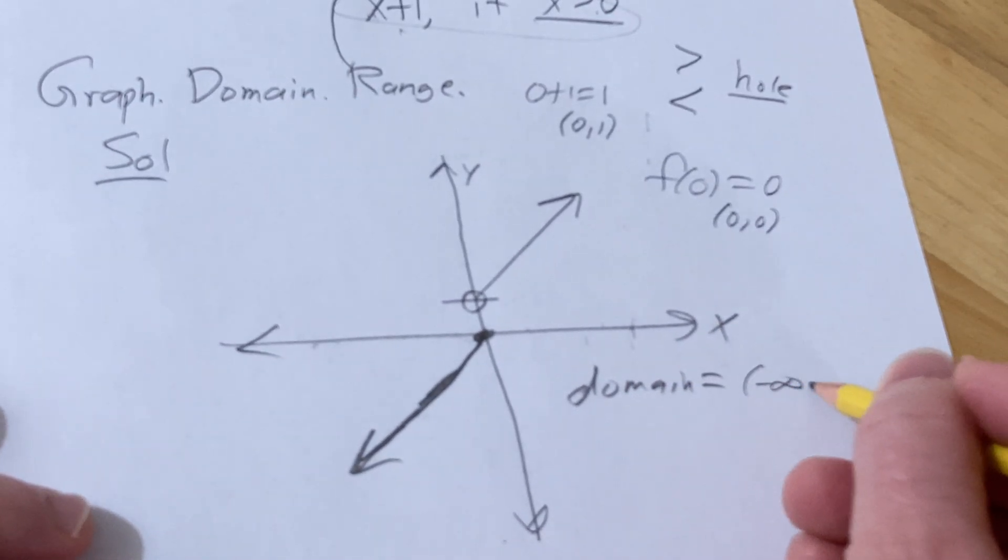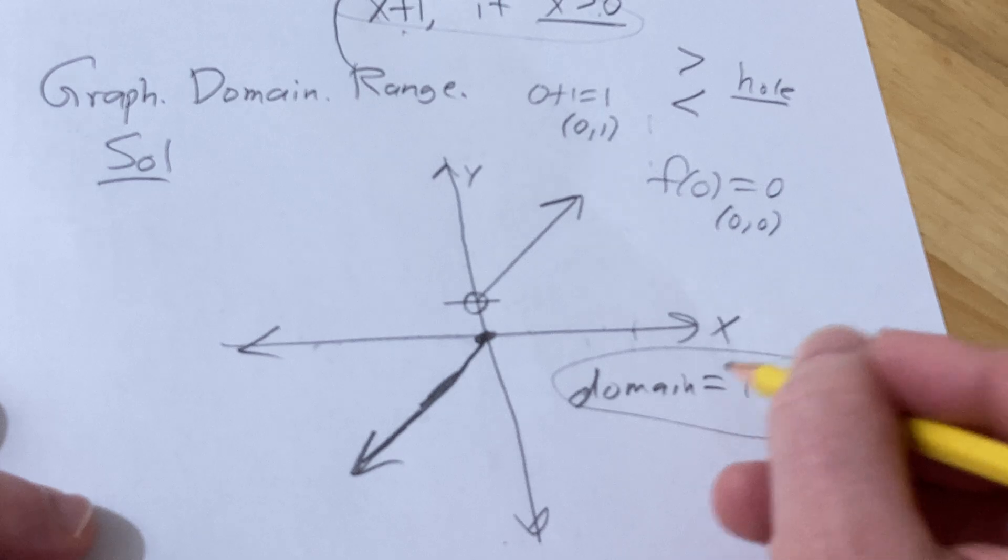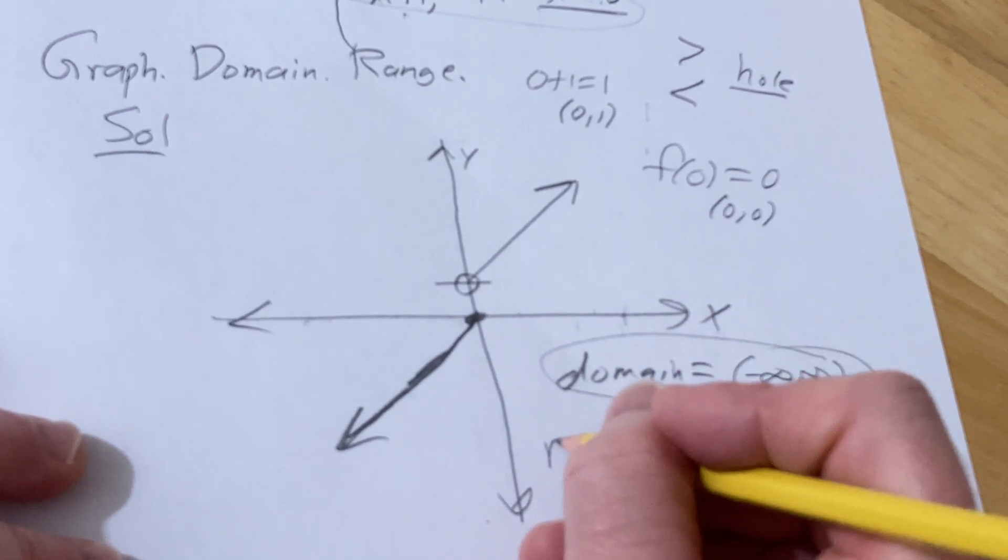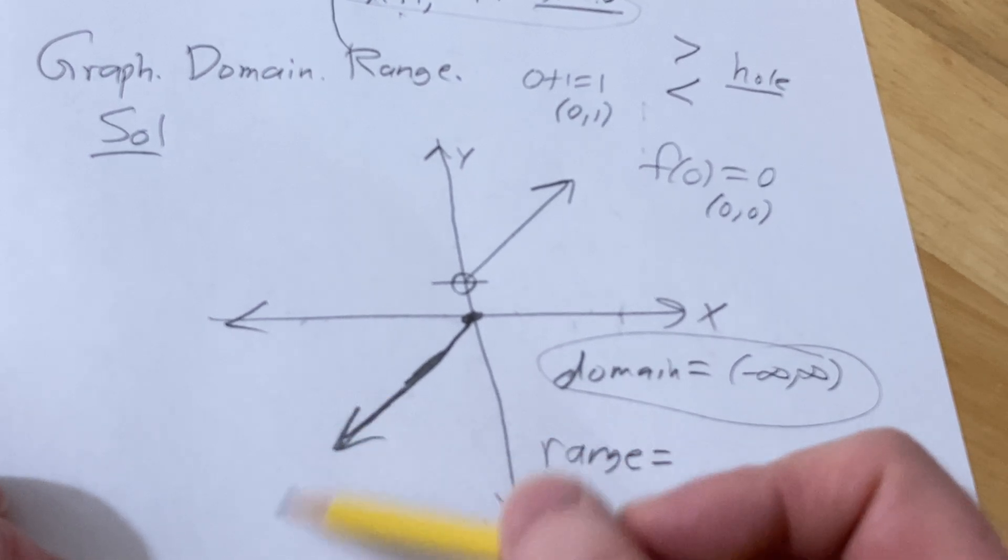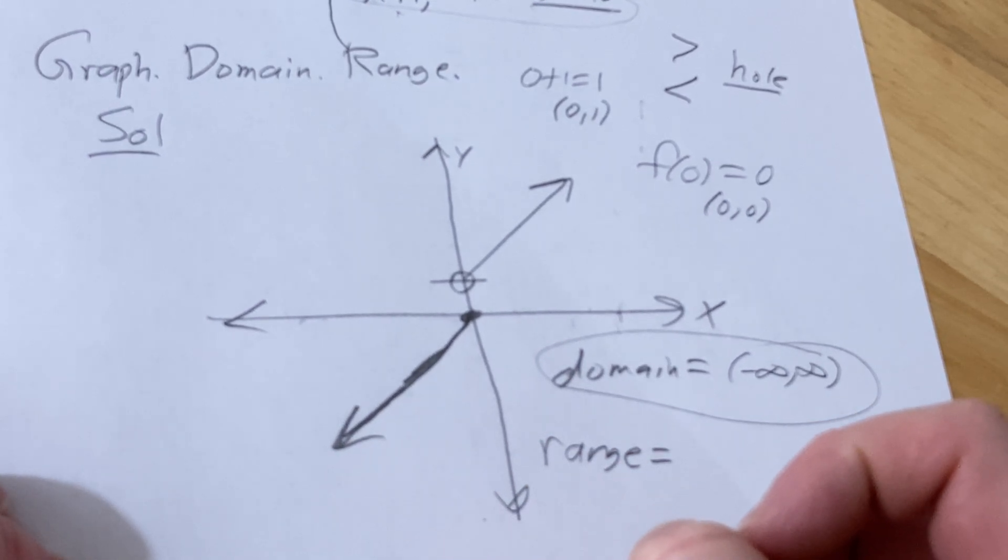So the domain is all real numbers. The range is all the possible y values. So this goes down forever. That's what the arrow means. It goes down forever. So you go from negative infinity all the way to zero.